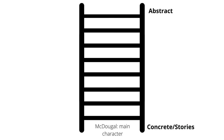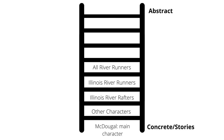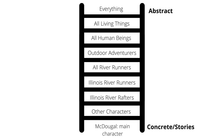As the author writes, he might expand who he's describing. So he might start talking about McDougal's party — the other river rafters with him — then move to people river rafting on the Illinois River, then up to Illinois River Runners, then all river runners and their sport, then outdoor adventurers. And then he's applying lessons McDougal is learning to all human beings. You can see that as he gets to that level, his concepts become more abstract and he's no longer narrating a story. Hart calls this summary narrative.